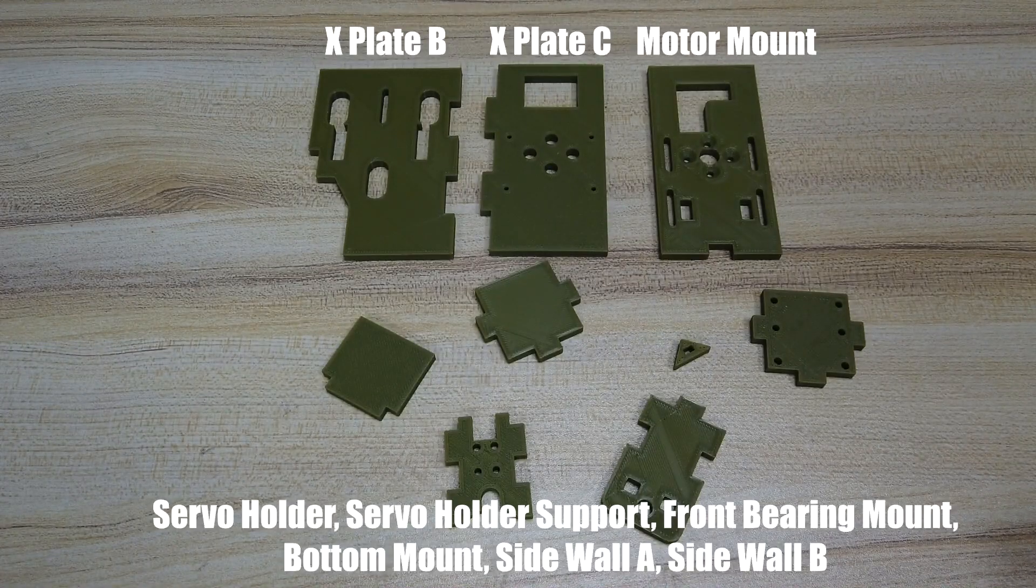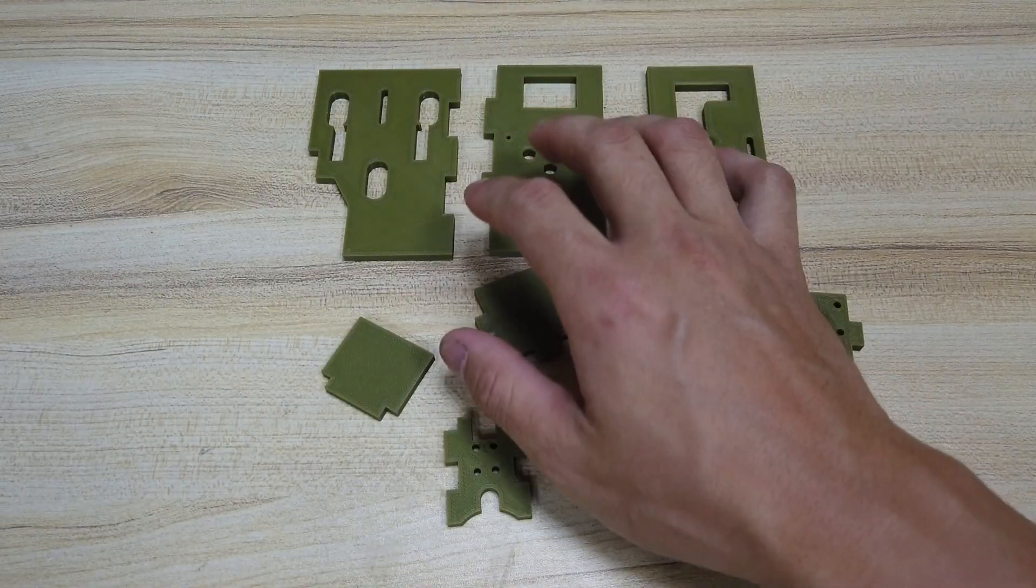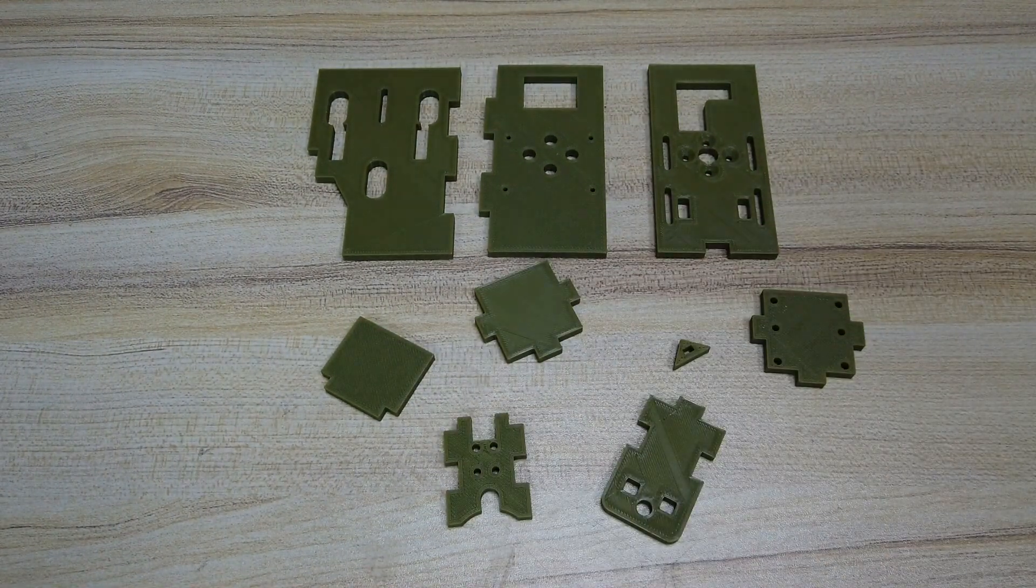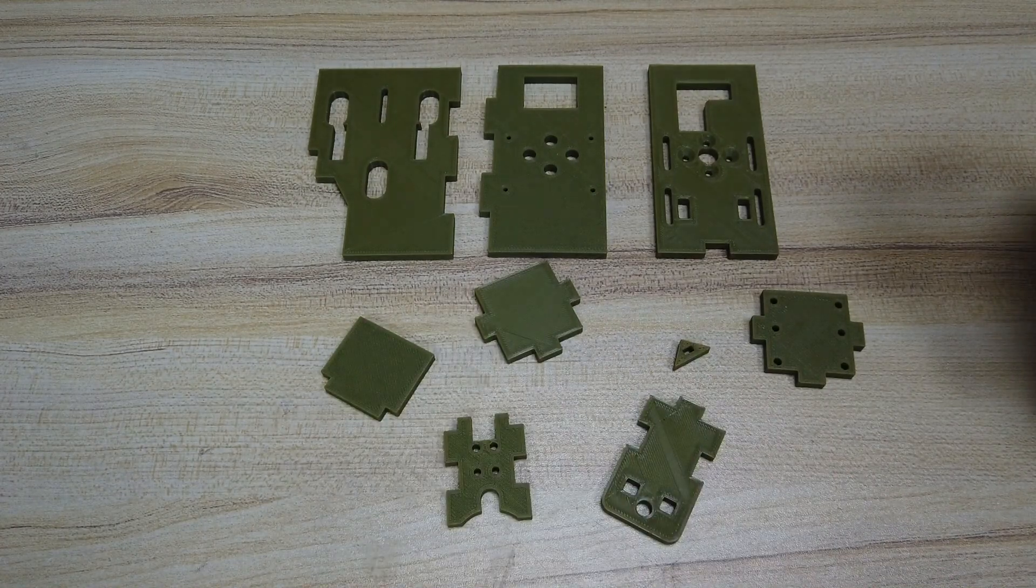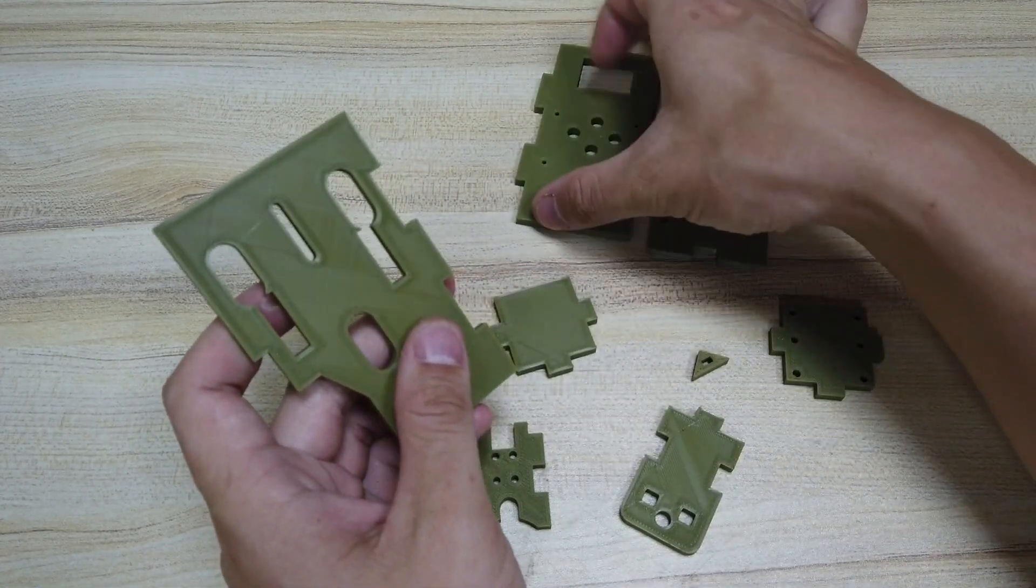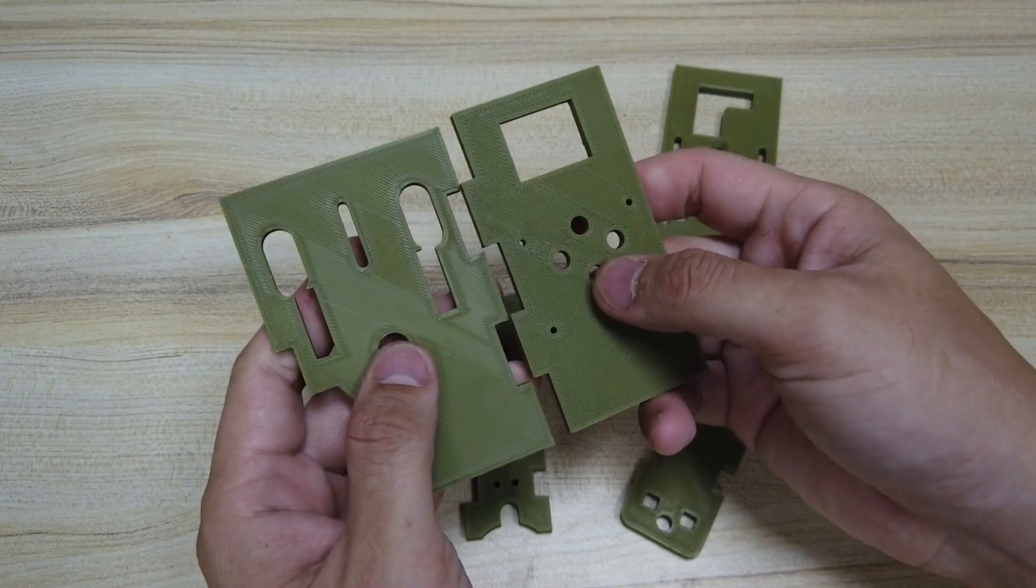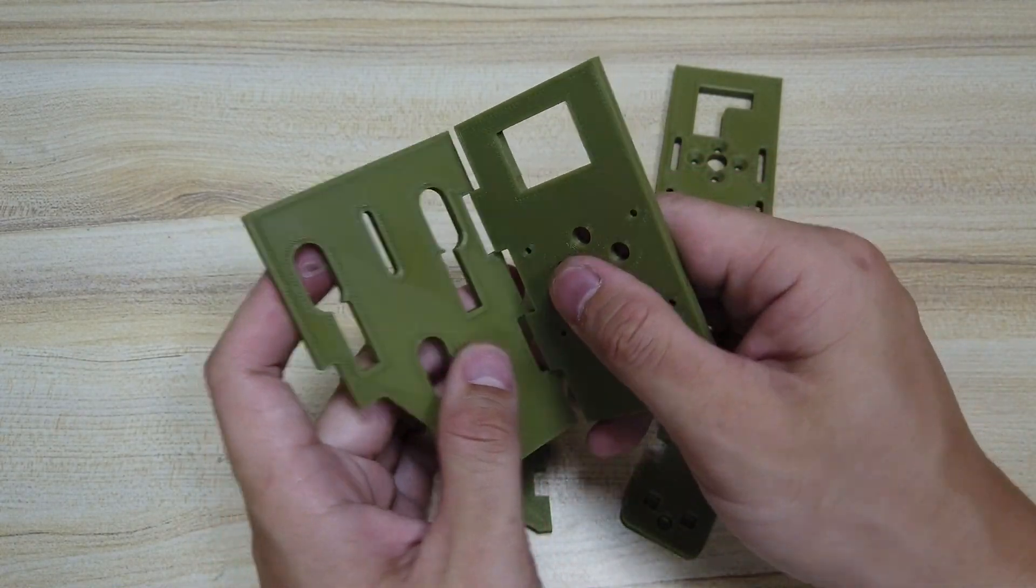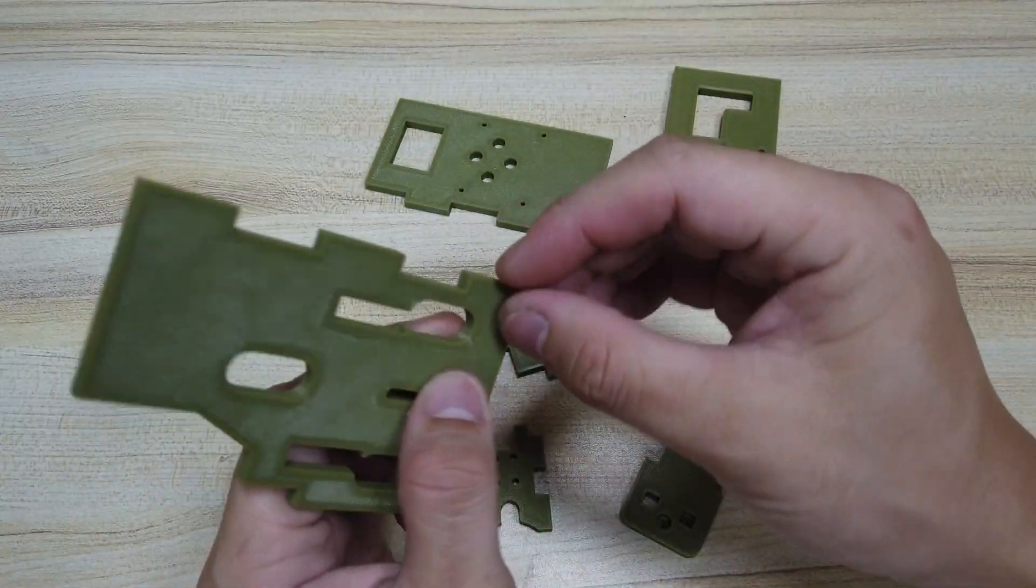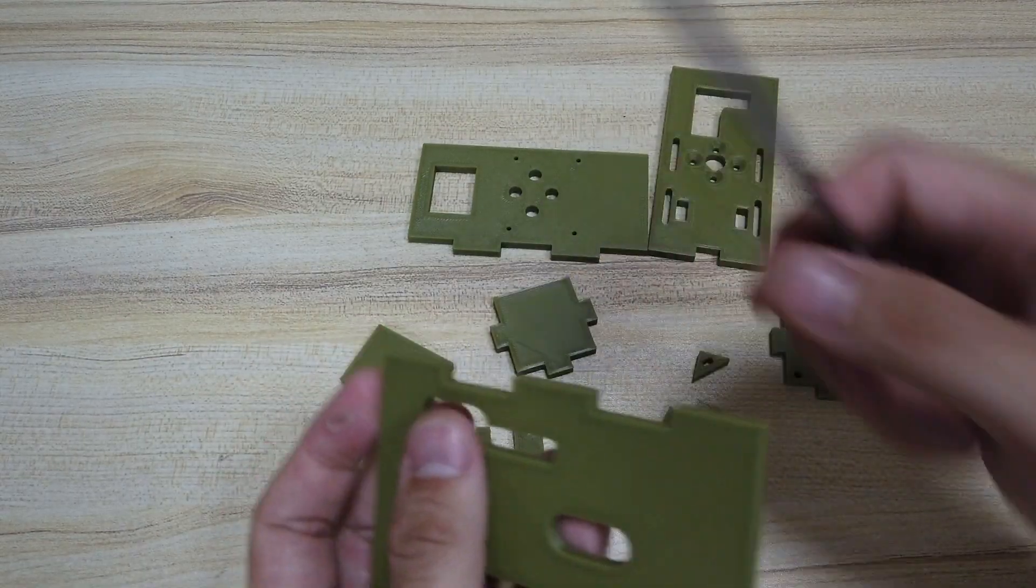First part, we are going to install the needle cutter assembly which looks something like this. You will need plate B, C, motor mount and all the other parts as shown here. First, you will need to join plate B and C together at a 90 degree angle like this. Notice the orientation, and for the first time it may be tight. The tolerance is correct, it's just that in certain printers there's this elephant leg at the edge, so it's a little bit tight. You need to file it here so that it fits.